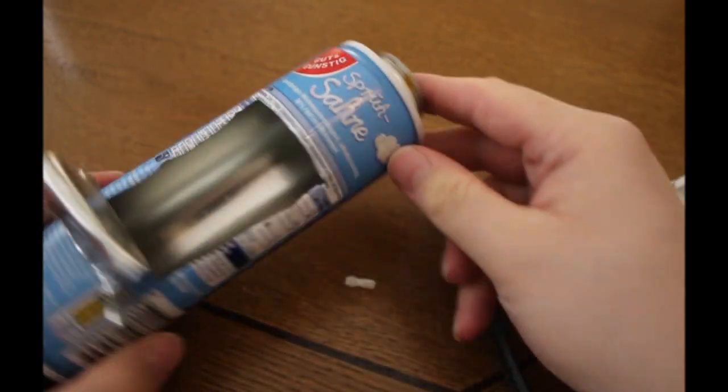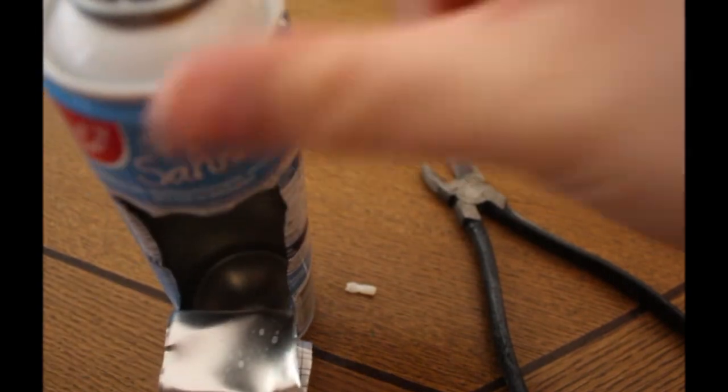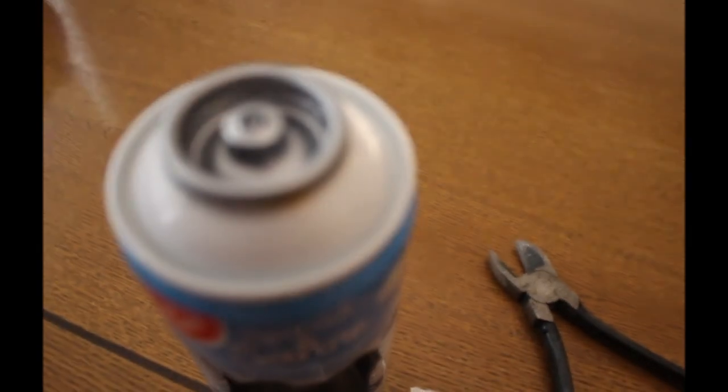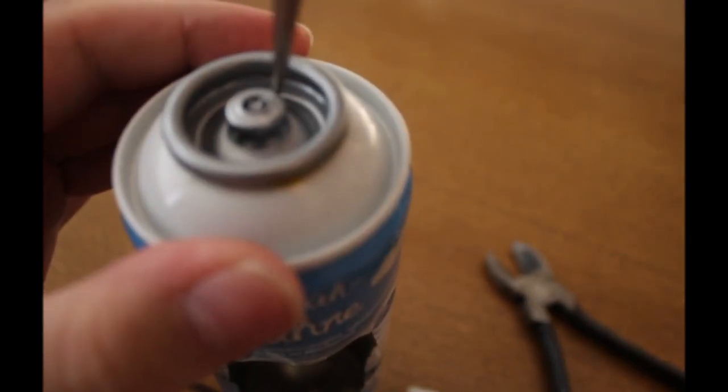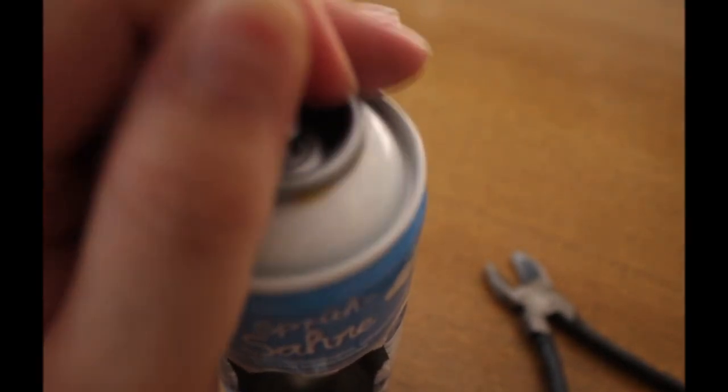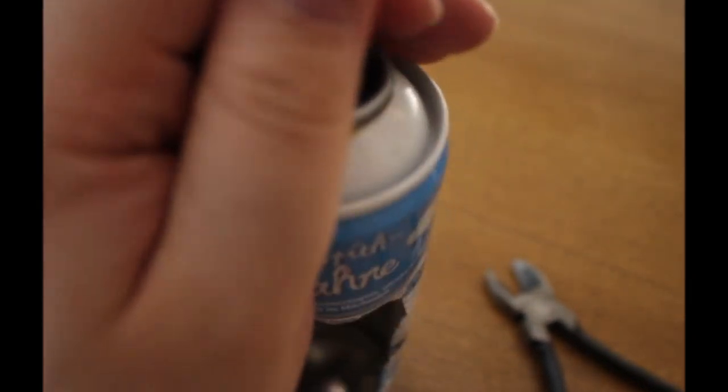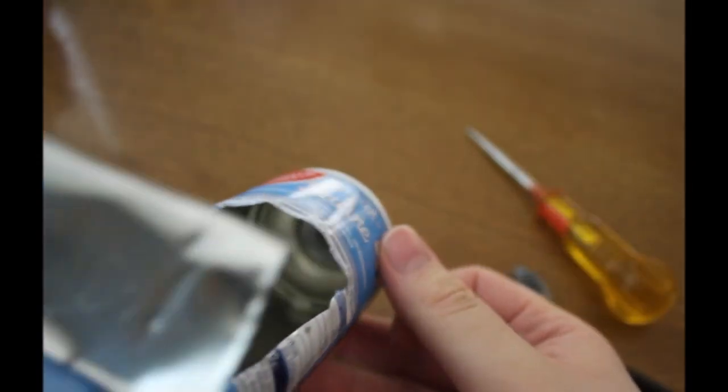So I've removed this little tip here and now we simply take a punch, you can use a nail or something, and we punch this in to remove the rest of it. Be careful there's a little spring in it. And here, there we go. And there's the spring.